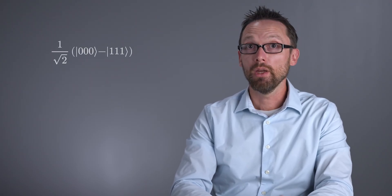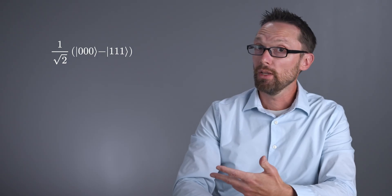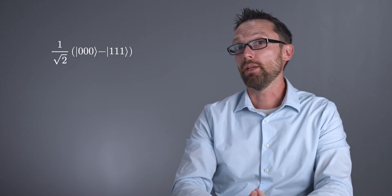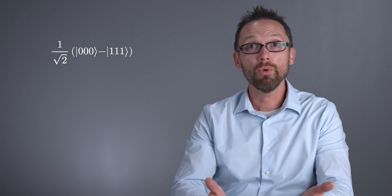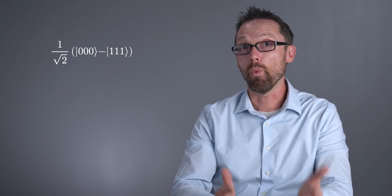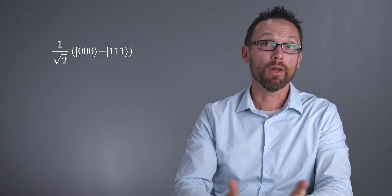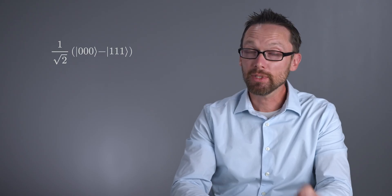We're not limited to entangling just two qubits. Consider this state. This is also obviously entangled. If I measure qubit 0 and I find it in the state 1, then I know that the system is in the state 111, and I know the other two qubits are also in that same state 1.